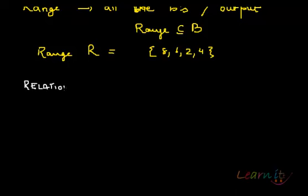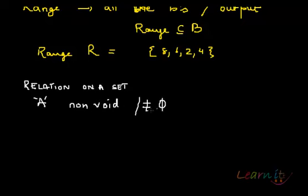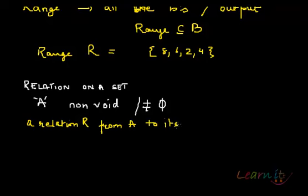Another very interesting concept: many times you see written that there is a relation on a set. When you're talking about a relation on a set, that actually means you have some non-empty set A, and the relation is from A to itself. That is what is known as the relation on a set — R has a relation with itself, meaning R is a subset of A cross A.